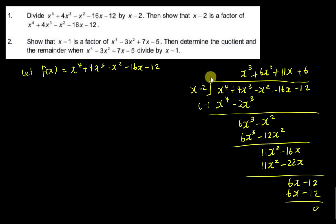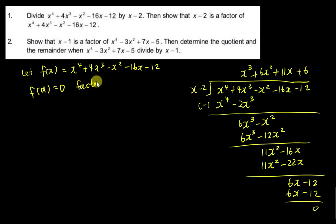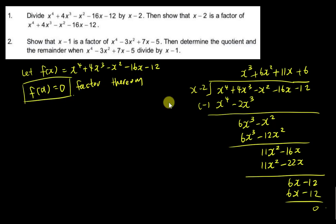I've already done what the question asked — divide by (x minus 2). Now for part 2, the question asks me to show that (x minus 2) is a factor of this polynomial. The Factor Theorem tells us that if f(a) equals 0, then (x minus a) is a factor. So if I substitute 2 into f(x) and get 0, then (x minus 2) is a factor.